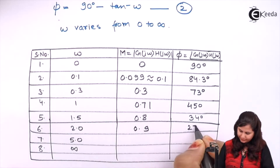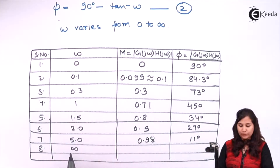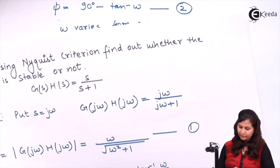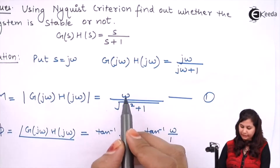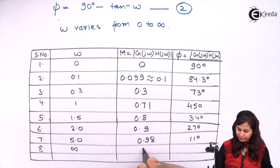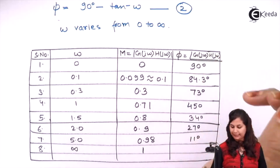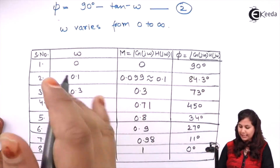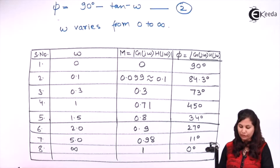For ω equals to infinity, putting it in the magnitude equation: magnitude comes out to be infinity upon (1 + infinity), which equals 1. The phase angle is 90 degrees minus tan inverse of infinity, that is 90 minus 90, which is 0 degrees. So we have obtained the magnitude and phase angle for different values of ω, and now we are going to plot the polar plot of the system.